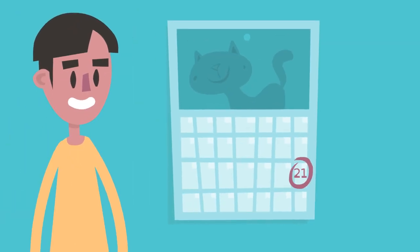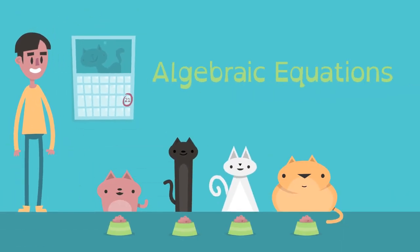Jason knows he needs a new bag of cat food in 21 days, thanks to algebraic equations.